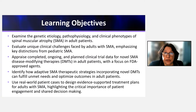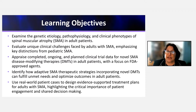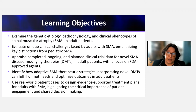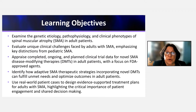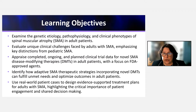Today we will cover the following learning objectives, starting with the genetic etiology, pathophysiology, and clinical phenotypes of spinal muscular atrophy in adult patients. We'll evaluate the unique clinical challenges faced by adults with SMA, emphasizing key distinctions from pediatric SMA. We'll appraise completed, ongoing, and planned clinical trial data for novel SMA disease-modifying therapies in adult patients, with a focus on FDA-approved agents.